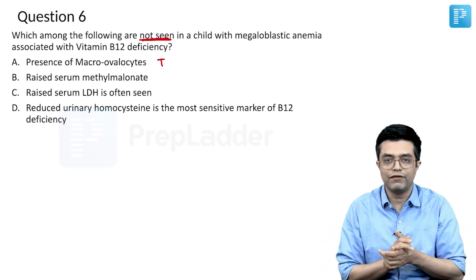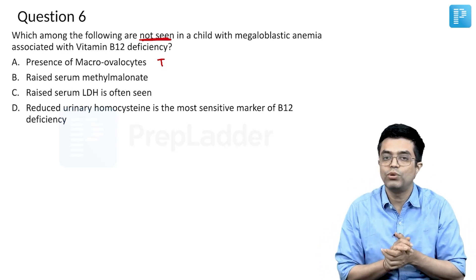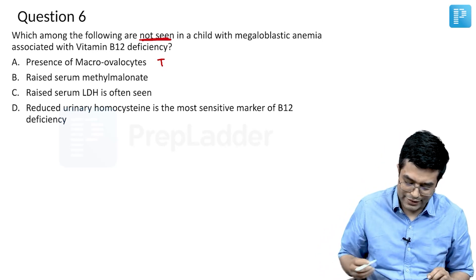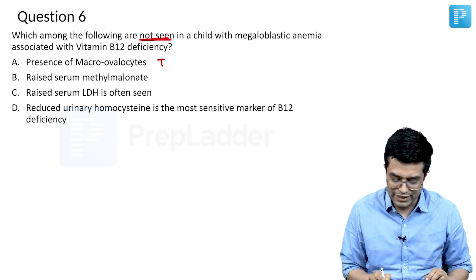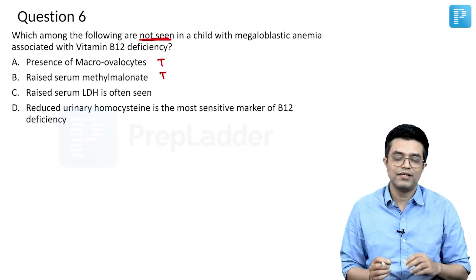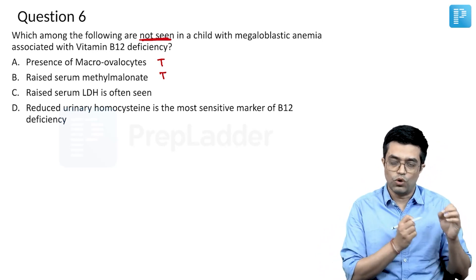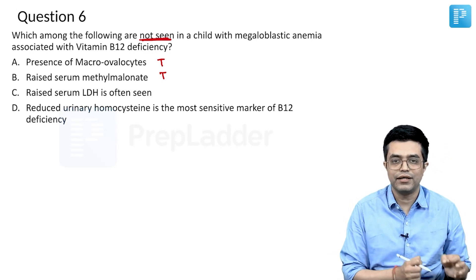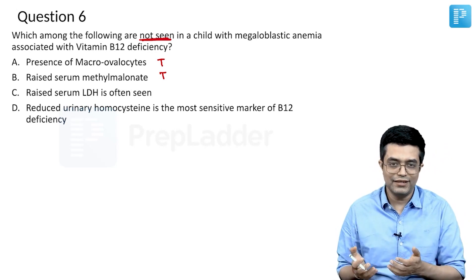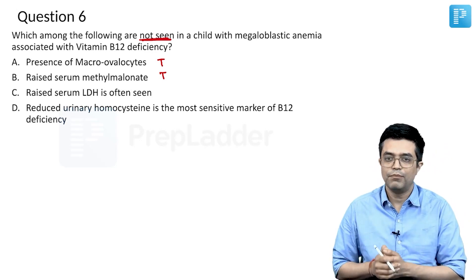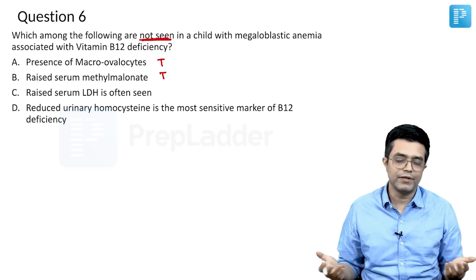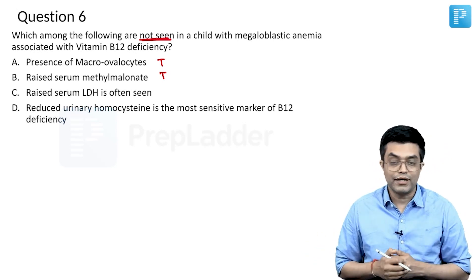Both being present, the first thing that should come to mind is we are dealing with B12 deficient anemia. Second, raised serum methylmalonate is again a true statement — raised serum homocysteine and raised serum methylmalonic acid are seen in these patients. Serum B12 levels will obviously be low.